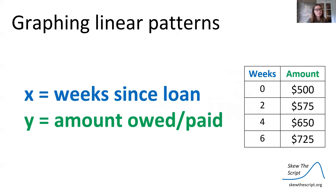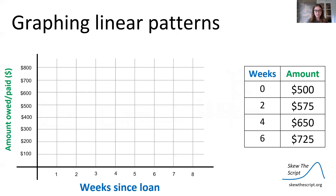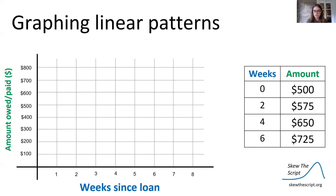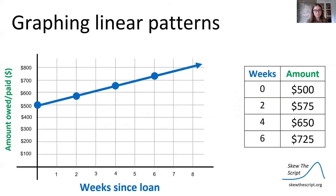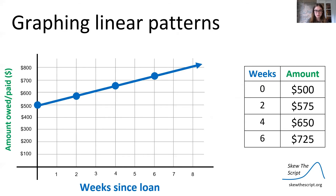We can graph this linear pattern with x being the weeks since the loan and y being the amount owed slash paid. Here we have our axes — x is weeks since loan, y is amount owed slash paid. We can graph all of our points and when we connect those points, we can see that this is a line — a linear pattern.